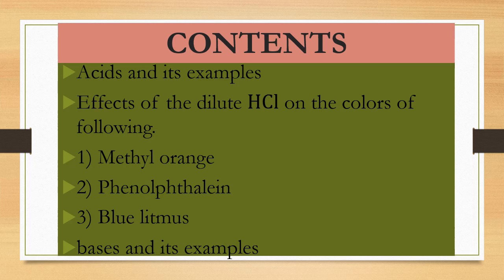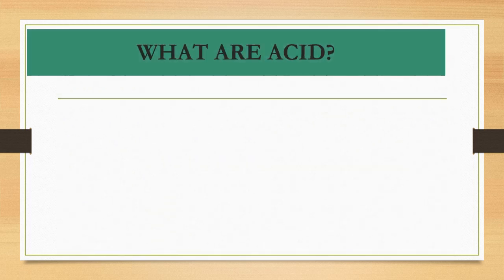Effect of the dilute HCl on the colors of the following: methyl orange, phenolphthalein, blue litmus, and newspaper. And then we will discuss what are the bases and its examples. So first of all, what are acids?